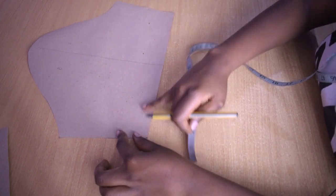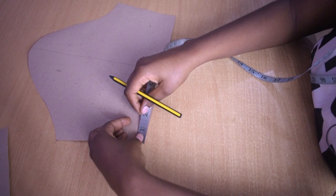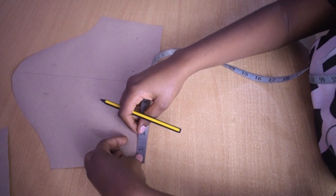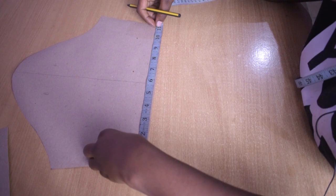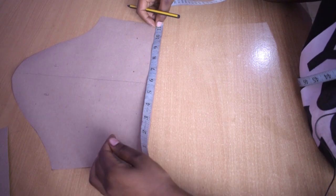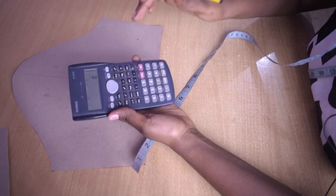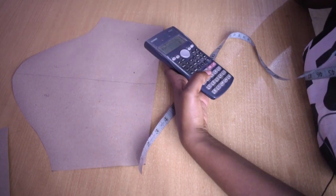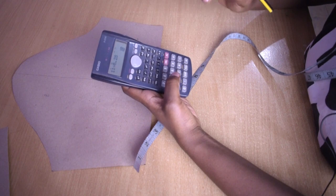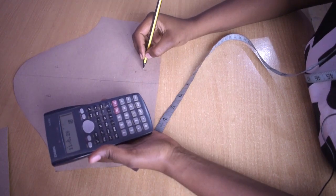So measure this part from here to here. You can do in inches or centimeters, it is up to you. Eleven and an eighth. I am just going to use 11 inches. So take whatever measurement you get, in my case 11 inches, and divide it by 6.28. I get 1.8 inches.